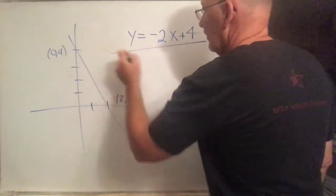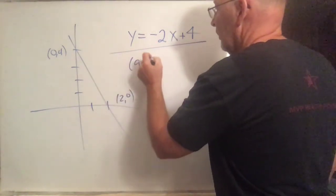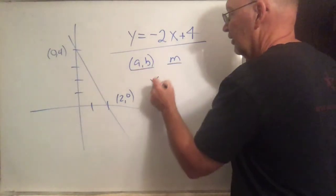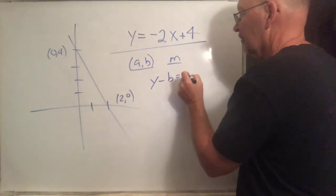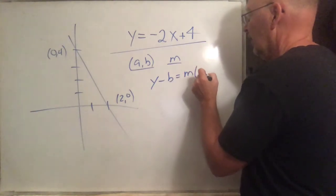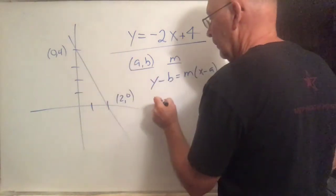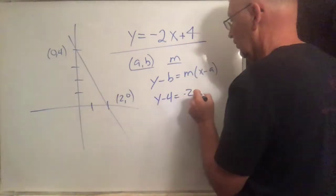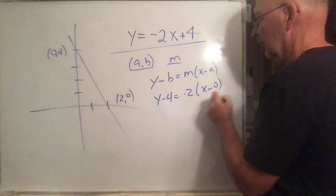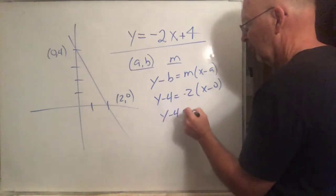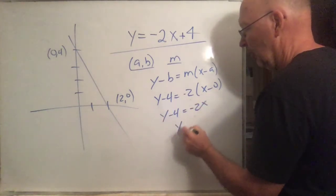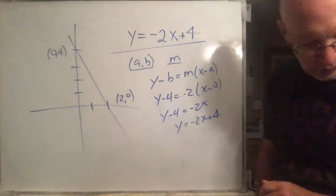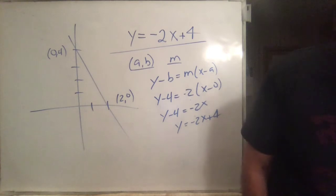The standard way to do anything, I always like to remind myself what it is. If it goes through the point (a, b) and the slope is m, it's just y minus b equals the slope times x minus a. So you go y minus 4 equals the slope, which we see is negative 2, times x minus 0. Y minus 4 equals negative 2x, so y equals negative 2x plus 4. So there you go. That was number 36.